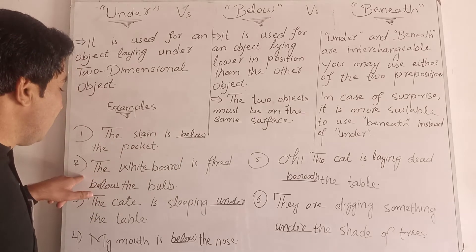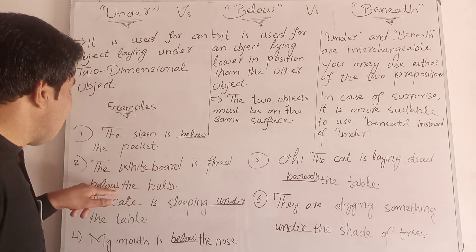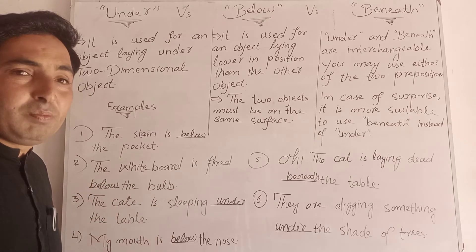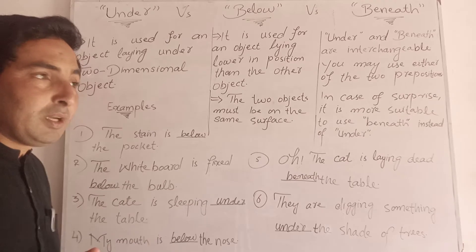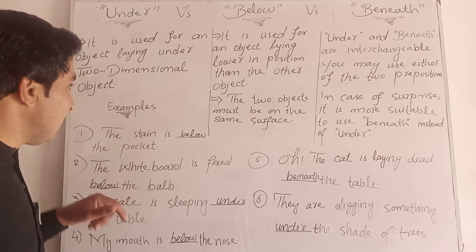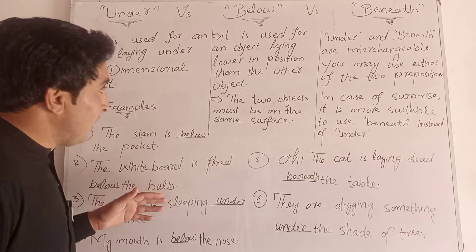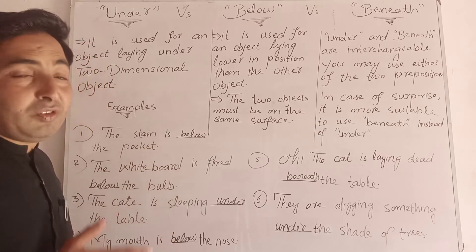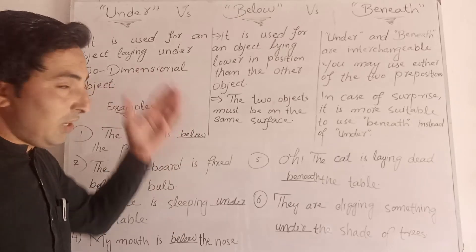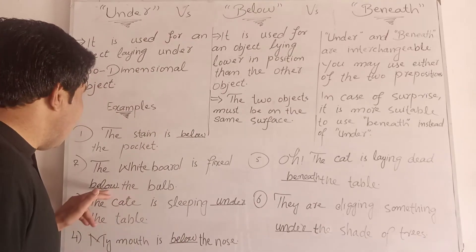Look at the second example: the white wood is fixed below the bulb. Because both the bulb and the wood are on the same surface — that is the wall of the room — that's why we use 'below' here.